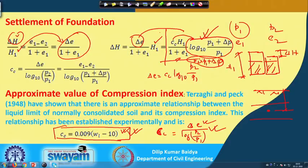Ultimately the consolidation settlement equation is: delta H equals Cc times H divided by (1 plus E) times log base 10 of (P1 plus delta P) divided by P1. This is the important formula one must remember.